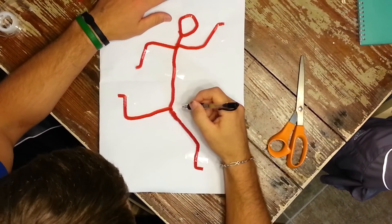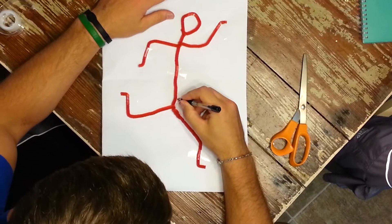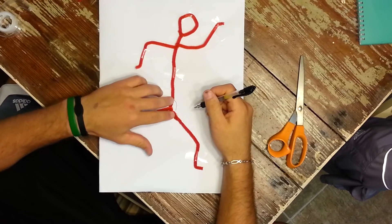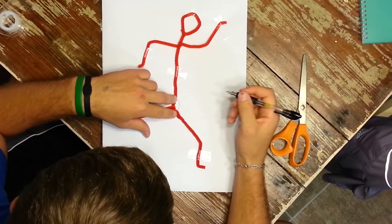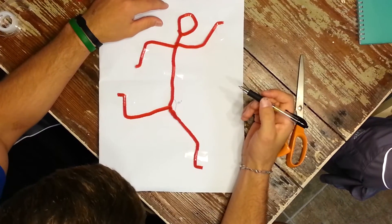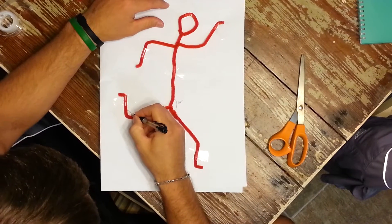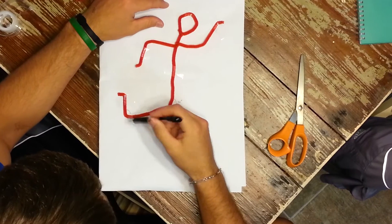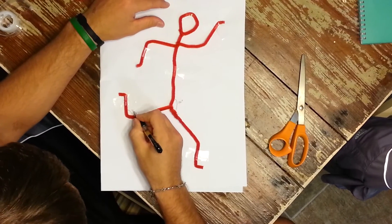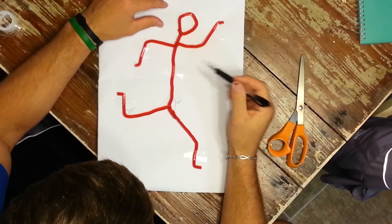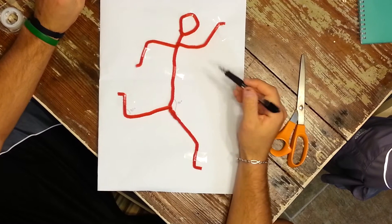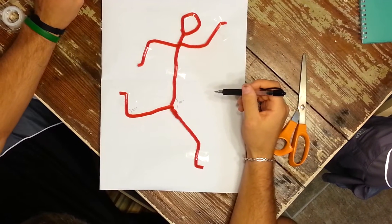For example, the angle created right here between the torso and the femur would be a relative angle, and that's roughly going to be 135 degrees. Another relative angle could be right here at the knee joint, and that would be an angle created by the tibia and fibula and the femur, which is roughly 90 degrees. So any angle on the body that is created by two joining body segments, at a joint, is considered a relative angle.